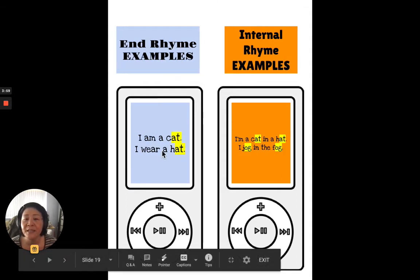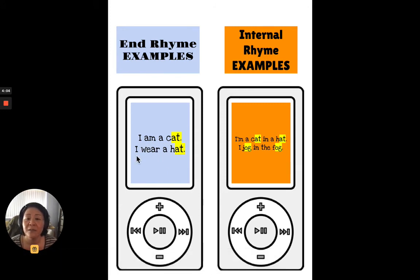So here is an example of an end rhyme. If this was part of a poem, I am a cat. I wear a hat. That at sound. And they're both at the ends of the lines.